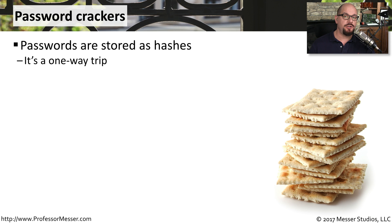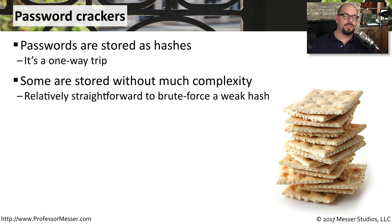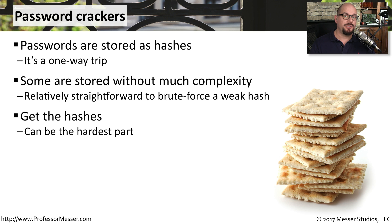On most operating systems and applications, we store users' passwords as hashes, because a hash is a one-way function. We can take a password and very easily convert it to a hash, but there's no way to take a hash and convert it back to the password. Some older operating systems or poorly developed applications might store their hashes in a straightforward way — with no salting and using a relatively weak hash — making it very easy to perform a brute force attack if you get your hands on those hashes. However, the process of obtaining those hashes usually involves breaking into a system to gain access to the files that contain them.